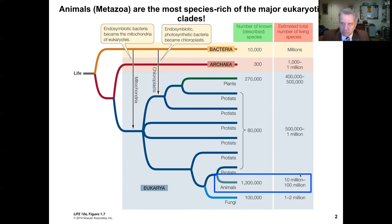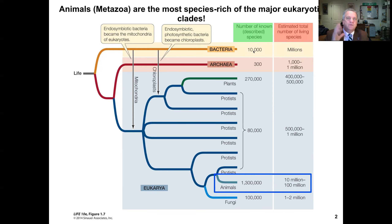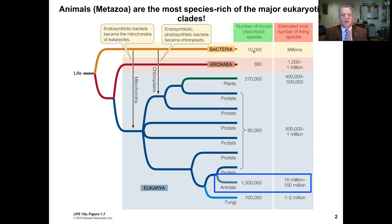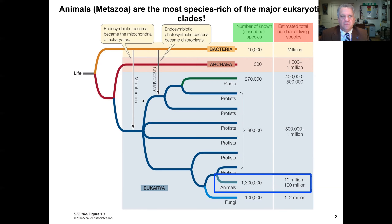These are the estimated total number of living species, and in green are the number of known or scientifically described species. This slide also shows that much of the known biodiversity that has been described and cataloged scientifically is just a fraction of the estimated total living biodiversity.